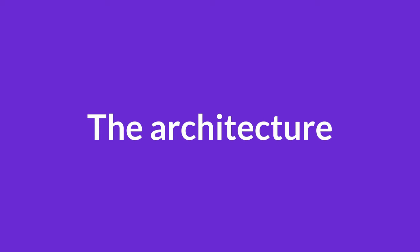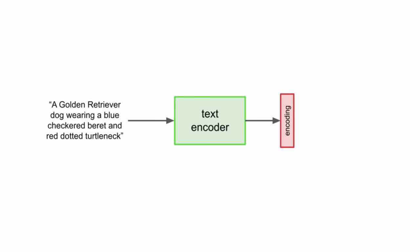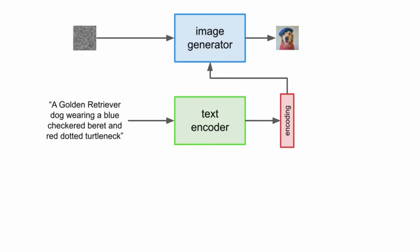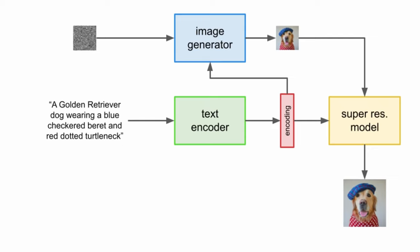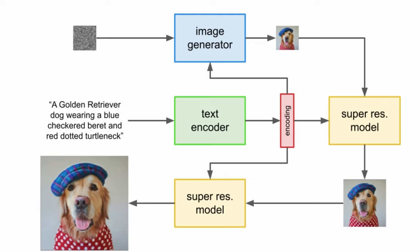Imagen has a couple of components working together to generate images. First, the text encoder accepts a caption as input and turns it into a text encoding. The image generator gets a fully noisy image plus the text encoding and generates a small image. This small image is then passed through two super-resolution models to be upscaled to 1024 by 1024 pixels.